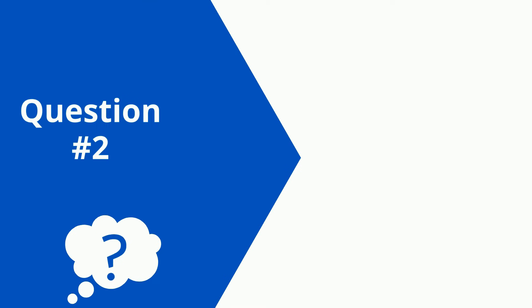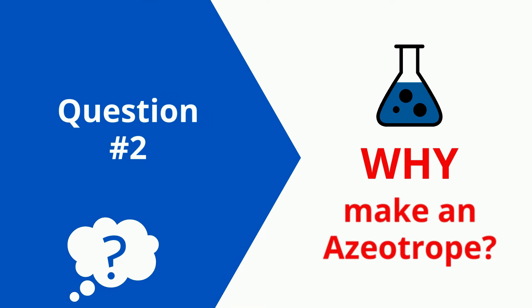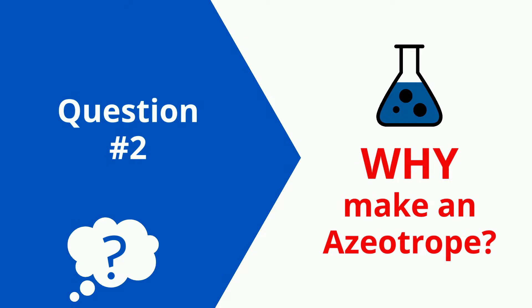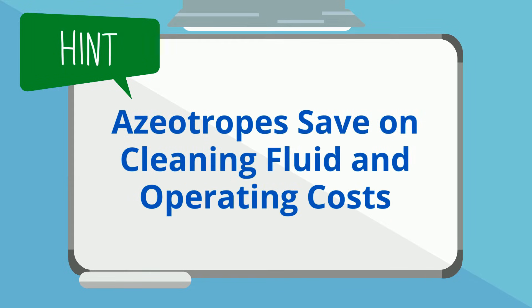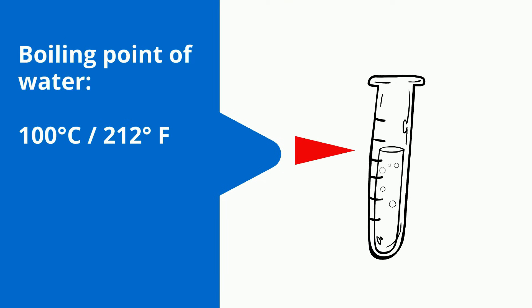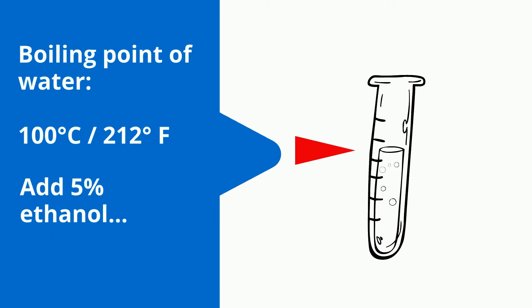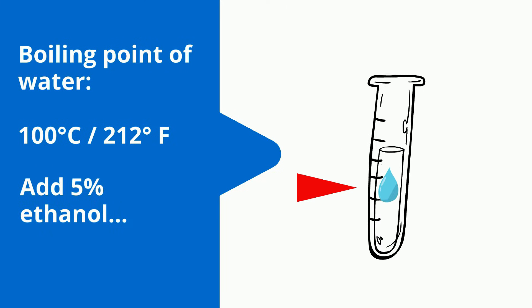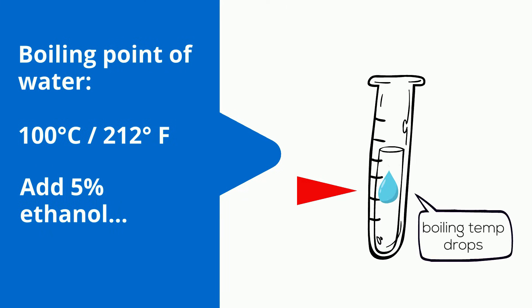So our second question is: why make an azeotrope? It's because azeotropes save on cleaning fluid and operating costs. The boiling point of water is about 100 degrees Celsius, but when we add that precise amount of 5% ethanol, the boiling temperature suddenly drops.